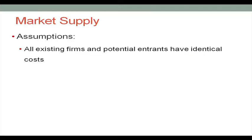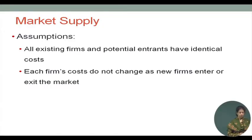The second assumption is that each firm's costs do not change as new firms enter or exit the market. We are assuming that if new firms enter or exit, that does not change the cost situation for existing firms. This also is not very realistic, because if there are a huge number of entrants in a market there will be pressure on existing inputs, and the cost of inputs may go up. We are going to relax this assumption later and see how it changes the long-run market supply curve.